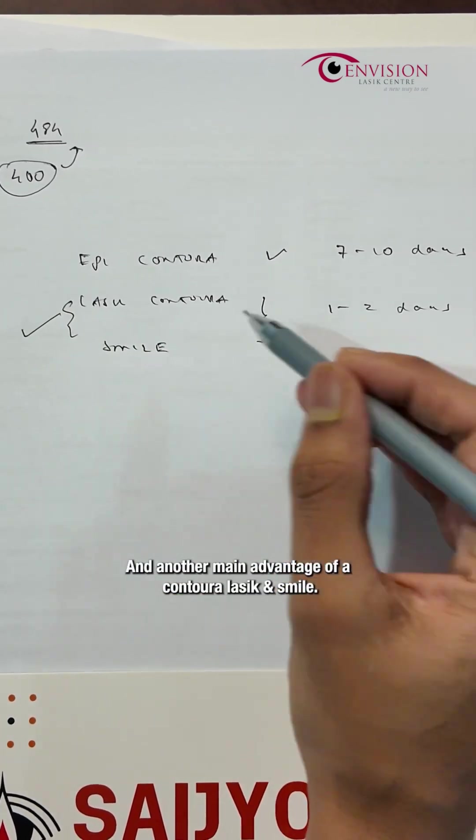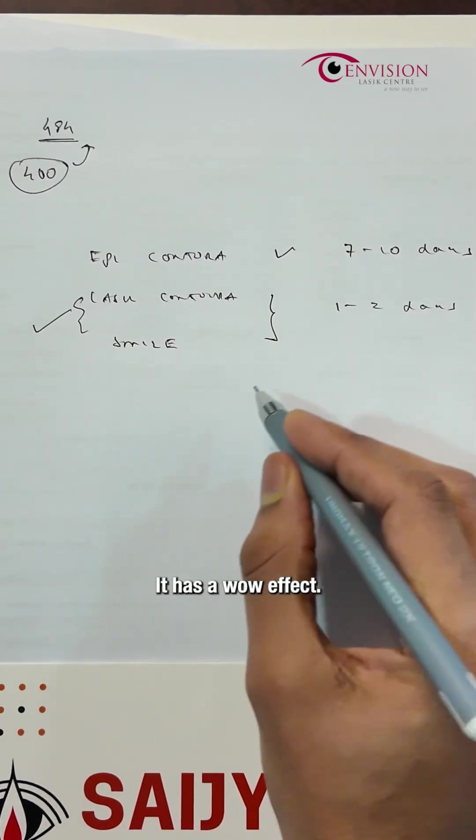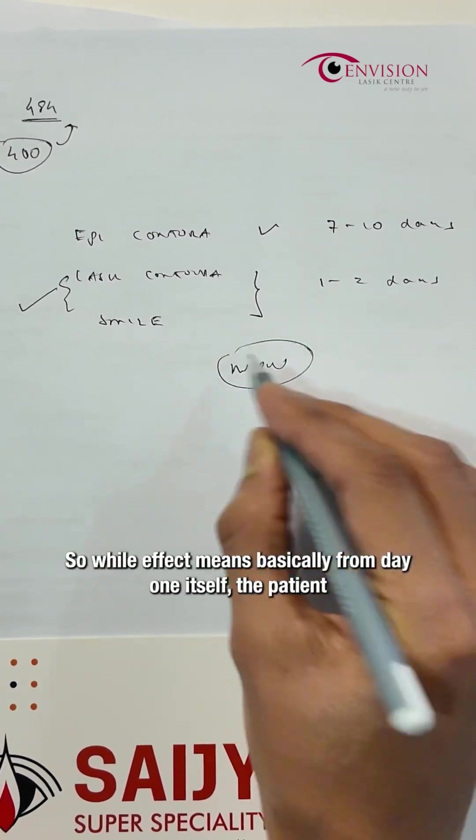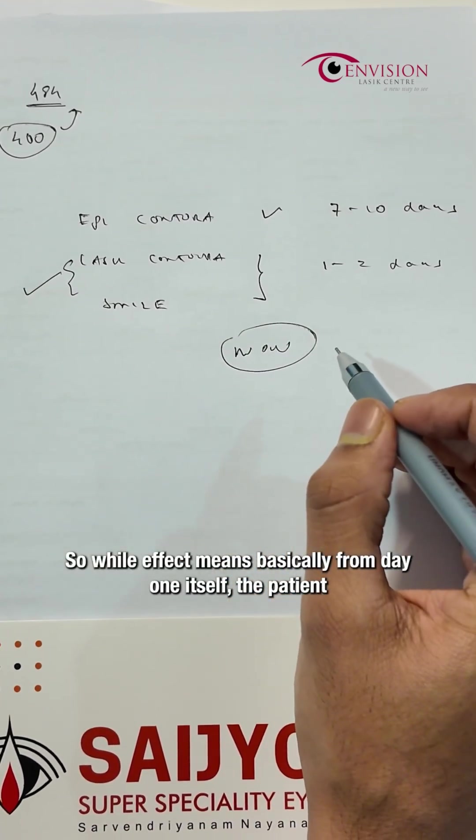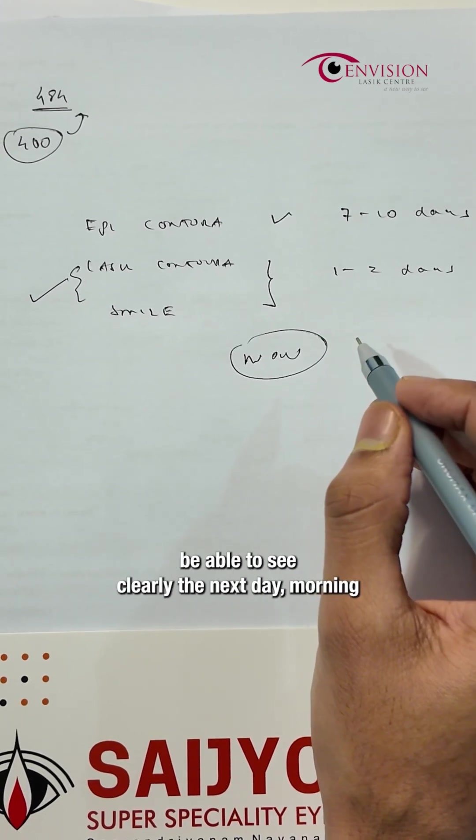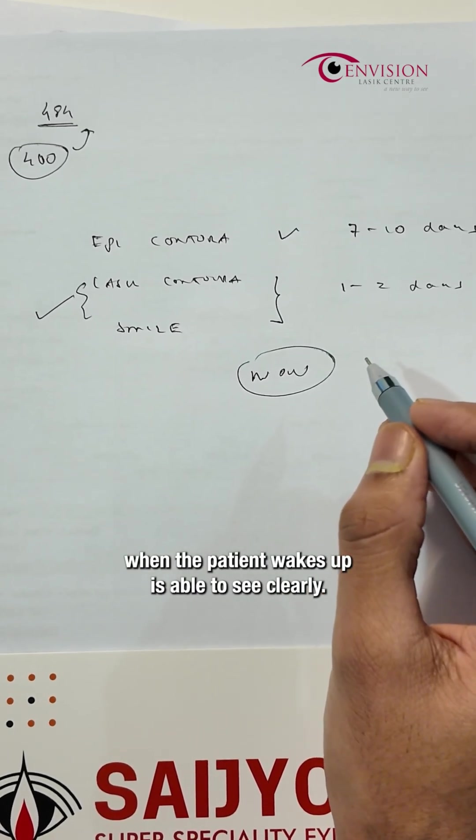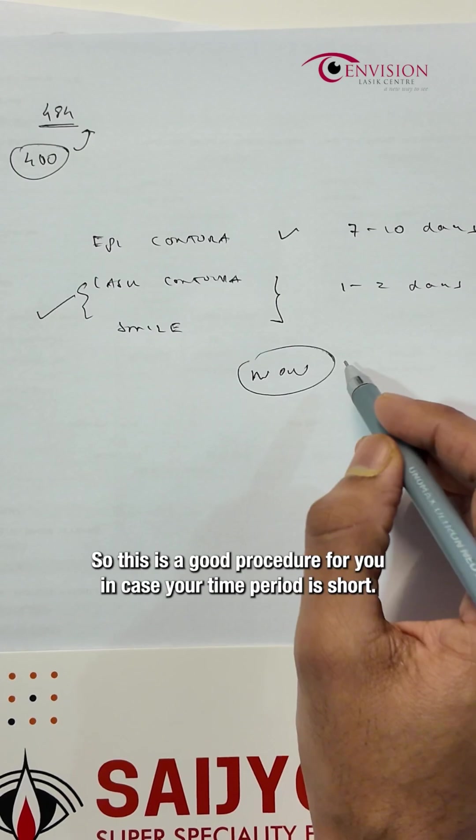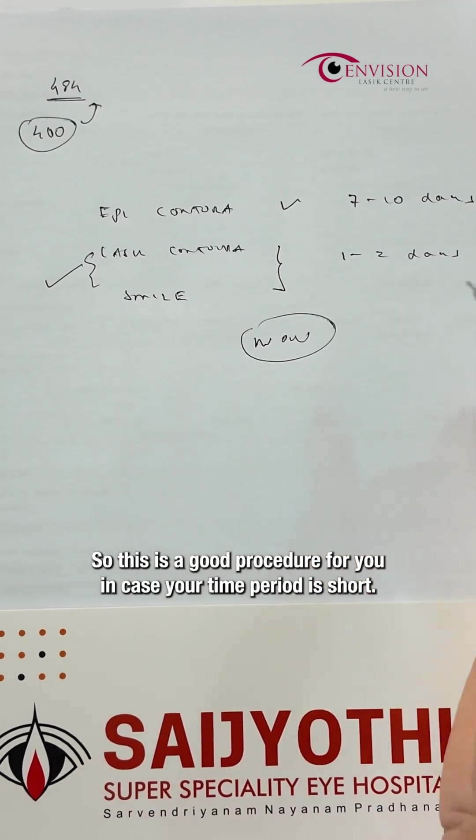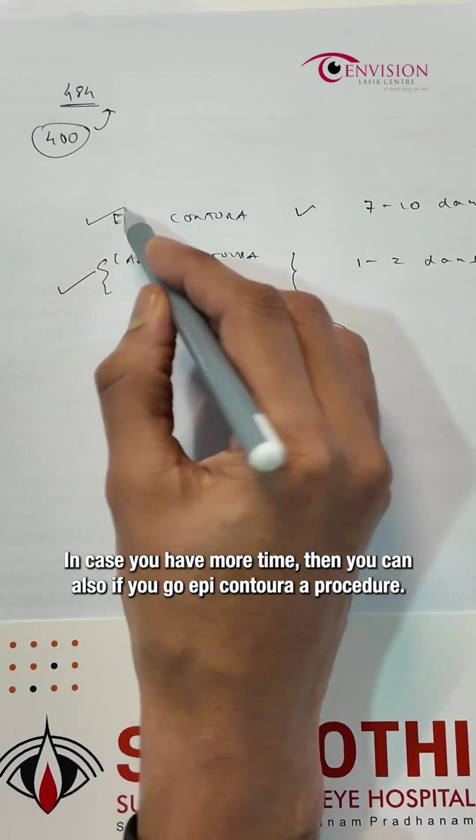And another main advantage of contura LASIK and SMILE is it has a wow effect. So wow effect means basically from day 1 itself, the patient will be able to see clearly. The next day morning when the patient wakes up, they're able to see clearly. So this is a good procedure for you in case your time period is short. In case you have more time, then you can opt for an epicontura procedure.